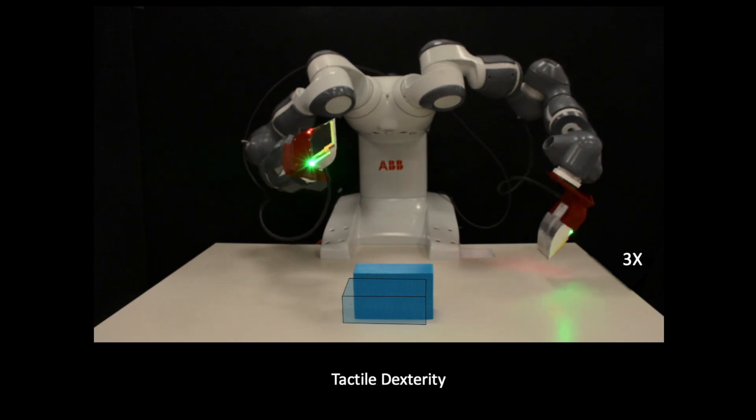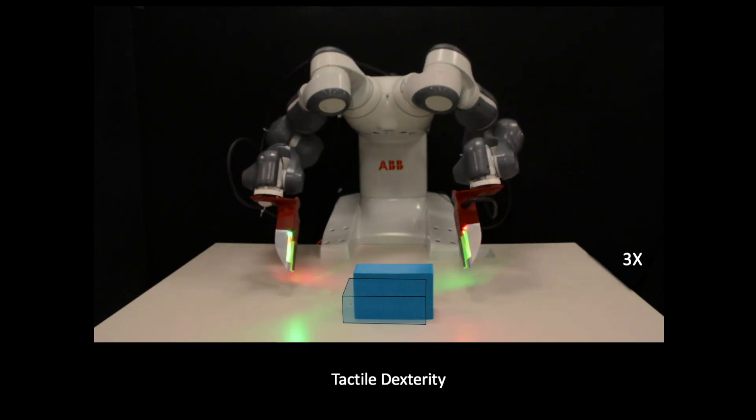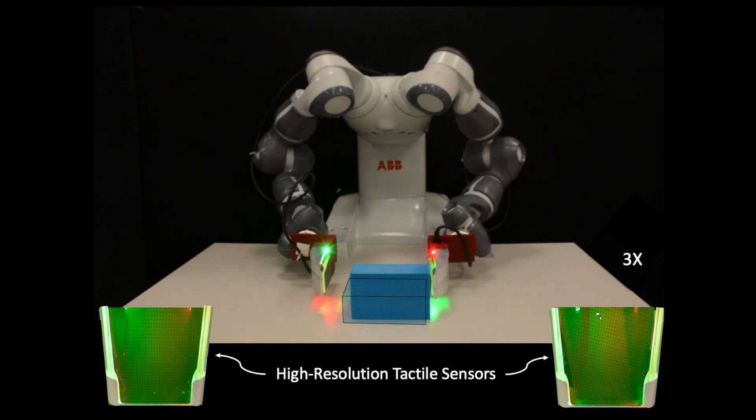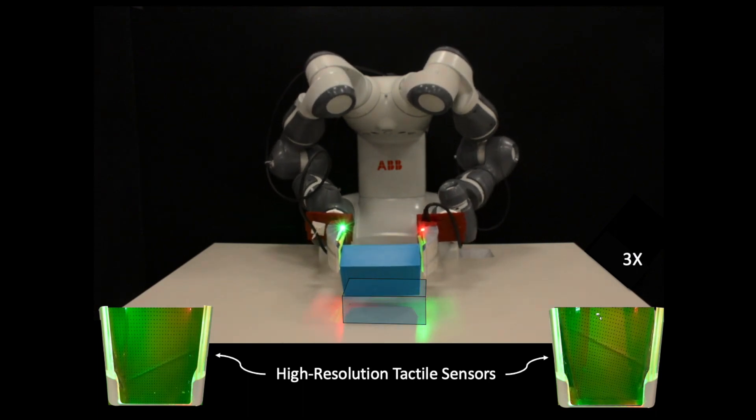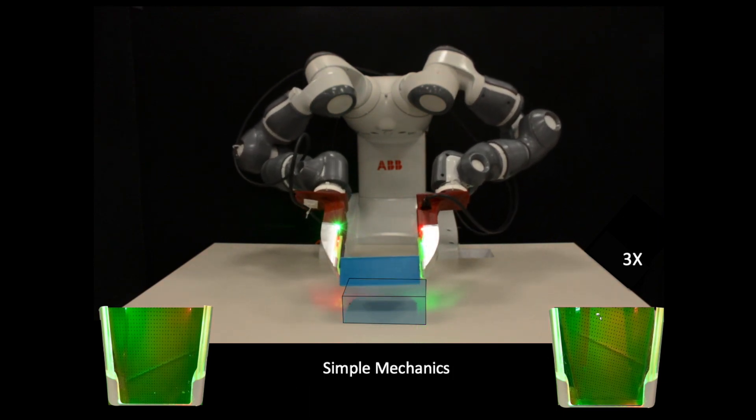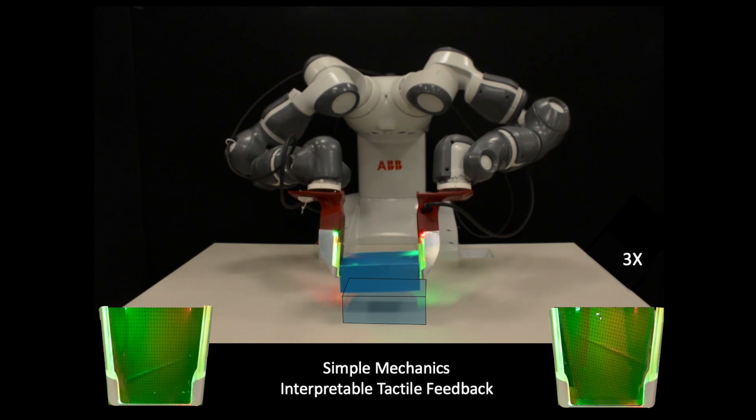We consider a dual-arm robot platform with palms equipped with high-resolution tactile sensors, and design closed-loop controllers to handle external perturbations by exploiting contacts that render simple contact mechanics and interpretable tactile feedback.